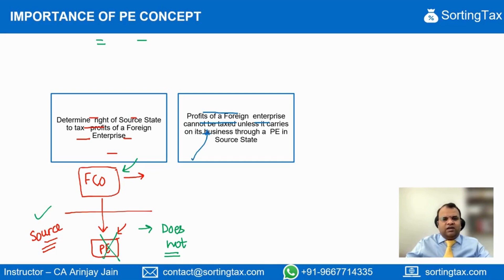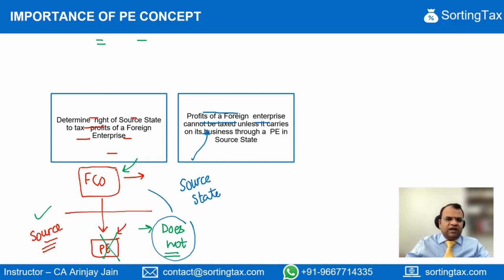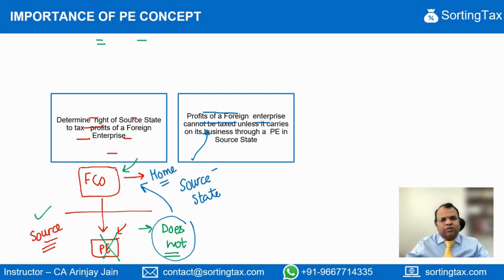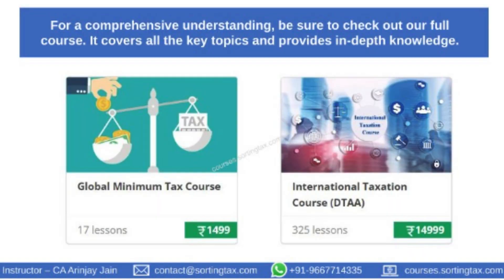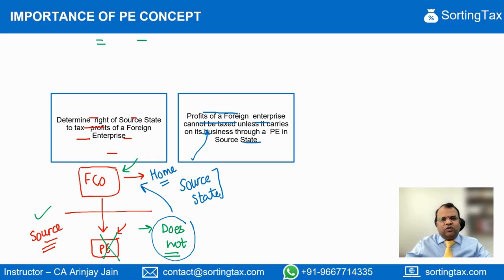Taxed where? In the source state. Please note that even if a PE does not exist, the profits earned by the foreign company will still be liable to tax in the home state of that foreign company. But the right to tax will not be there with the source state unless the foreign company carries on business through a PE in the source state.